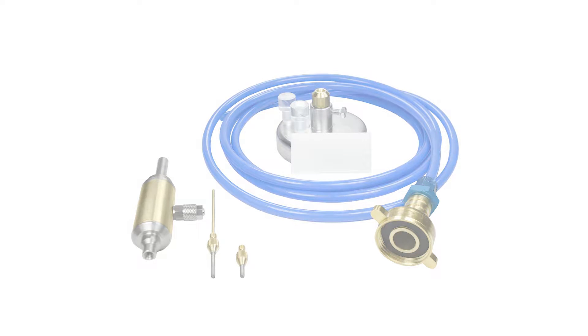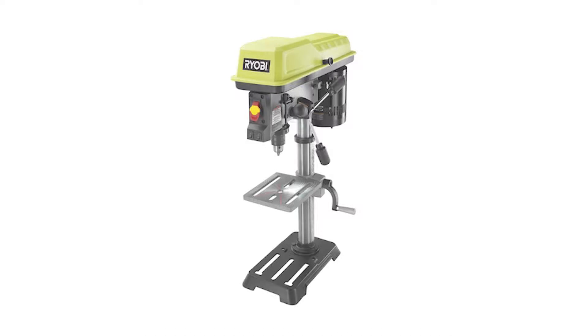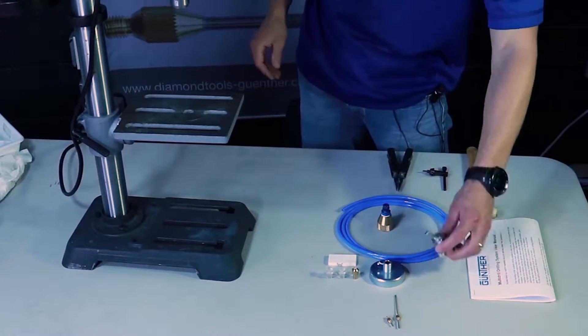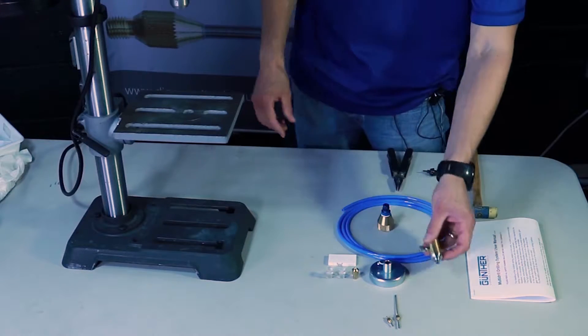But today we're going to put them together on this Ryobi drill press I got at Home Depot. This system will adapt to most any drill press as long as the chuck is big enough to receive the seven millimeter shaft on our drilling spindle.